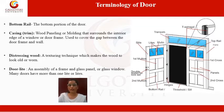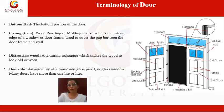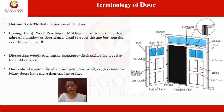Distressing wood is a texturing technique which makes the wood look old — that is known as distressing wood. Door light is an assembly of a frame with a glass panel or glass window. Many doors have more than one light, and the number can vary depending on the design of the door.